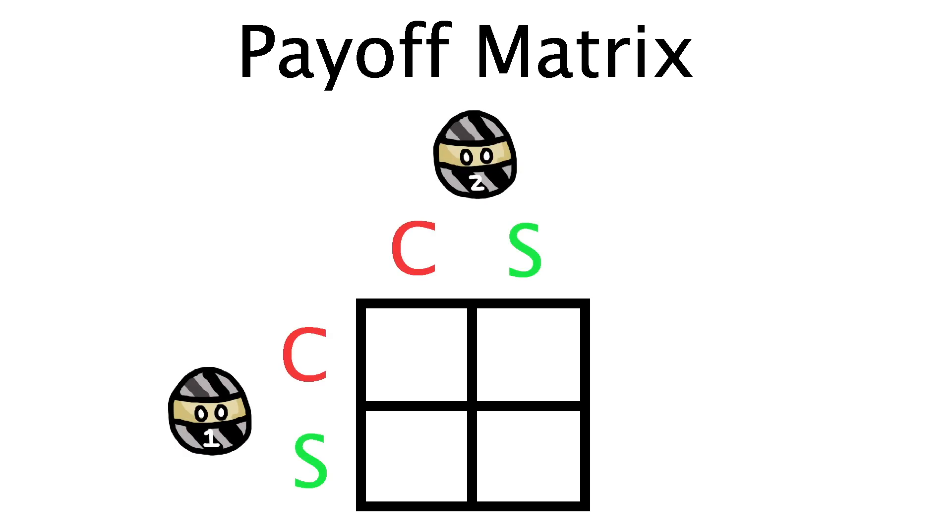Let's represent these through a payoff matrix, a standard diagram used in game theory. The first two rows represent what player one can do, confess or stay silent, and likewise, the two columns represent what player two can do, and as we discussed, this results in four total possibilities for the game.